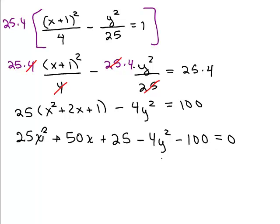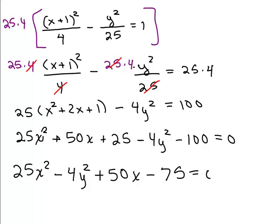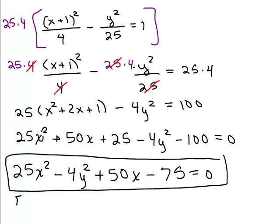I'm just going to put my like terms together now. So I've got 25x squared. Then I'm looking for my y squared term. Then I'm looking for my x term. There is no y term and I've got 25 minus 100. So it's minus 75 equals 0. That's the equation of the hyperbola in general form.